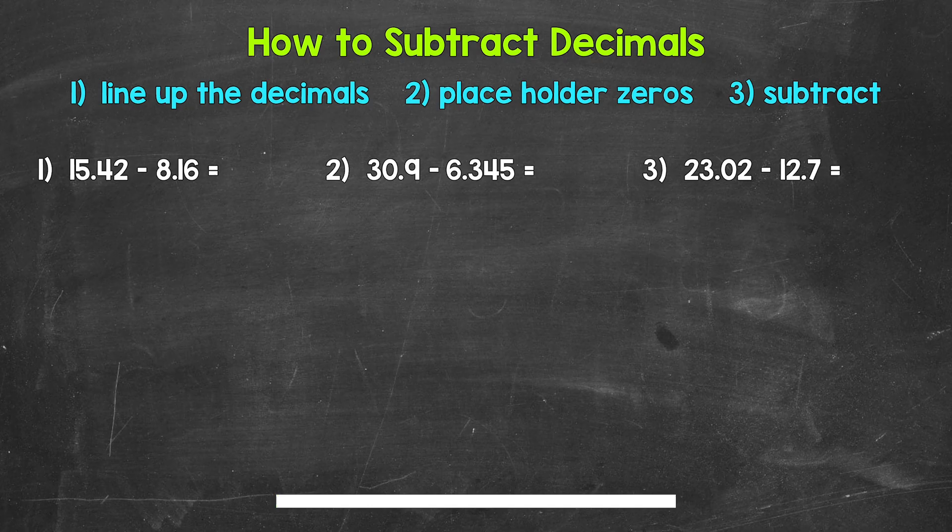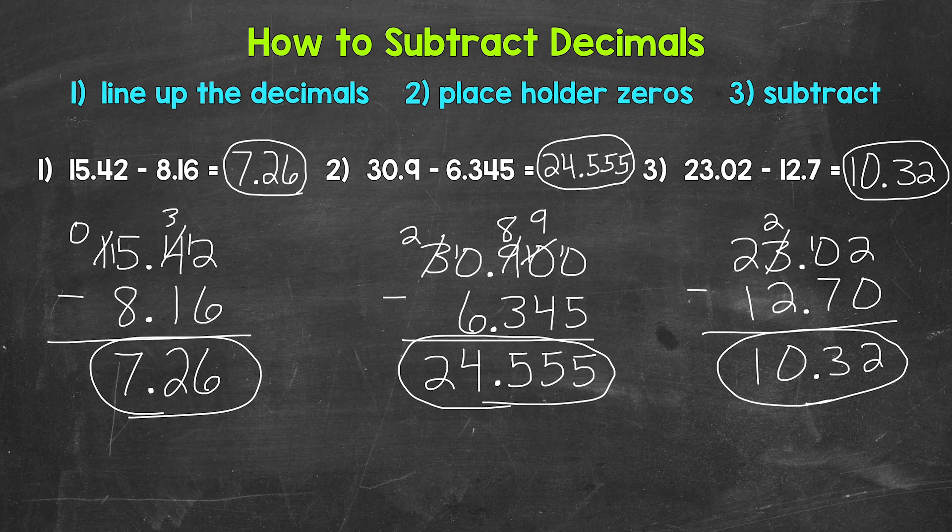Okay, so that was three minutes. Let's go over the answers. For number one, 15 and 42 hundredths minus 8 and 16 hundredths equals 7 and 26 hundredths. Moving on to number two, we have 30 and 9 tenths minus 6 and 345 thousandths equals 24 and 555 thousandths. And then lastly, we have 23 and 2 hundredths minus 12 and 7 tenths equals 10 and 32 hundredths.